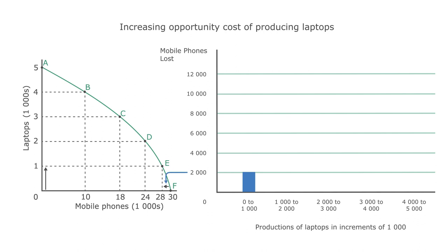As the production of laptops continues to increase, more and more resources are allocated away from the production of mobile phones. Another increase in the production of laptops from one thousand to two thousand results in four thousand fewer mobile phones being produced.